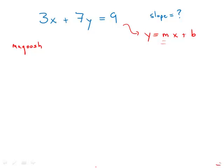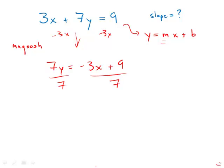What we're going to do is, first, subtract 3x from both sides, and so what I get is 7y equals negative 3x plus 9. Now I'm going to divide both sides by 7, remembering to divide everything on the right side. So we get y equals negative 3/7 x plus 9/7.